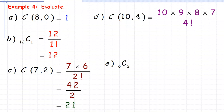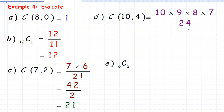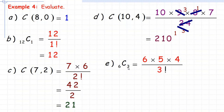10 choose 4: write 10 × 9 × 8 × 7 divided by 4 factorial (which is 24). Dividing out: 8 goes into 24 three times, and 3 goes into 9 three times, leaving 10 × 3 × 7 = 210. For 6 choose 3: 6 × 5 × 4 divided by 3 factorial (which is 6). The 6 cancels, leaving 5 × 4 = 20. And that's the end of the video.